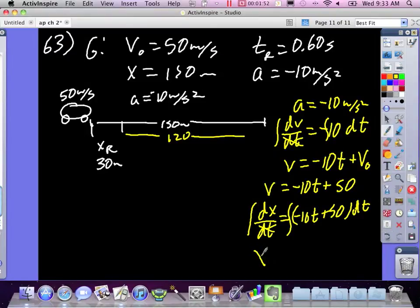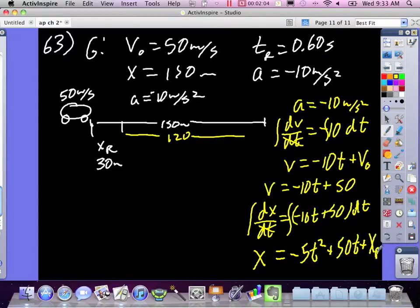x equals negative 5t² plus 50t plus x_R, and x_R was that position up there wherever it started. So this right here, this constant, if his brakes were instantaneous then that would be zero, but since it's not instantaneous you can just use the 30 meters.